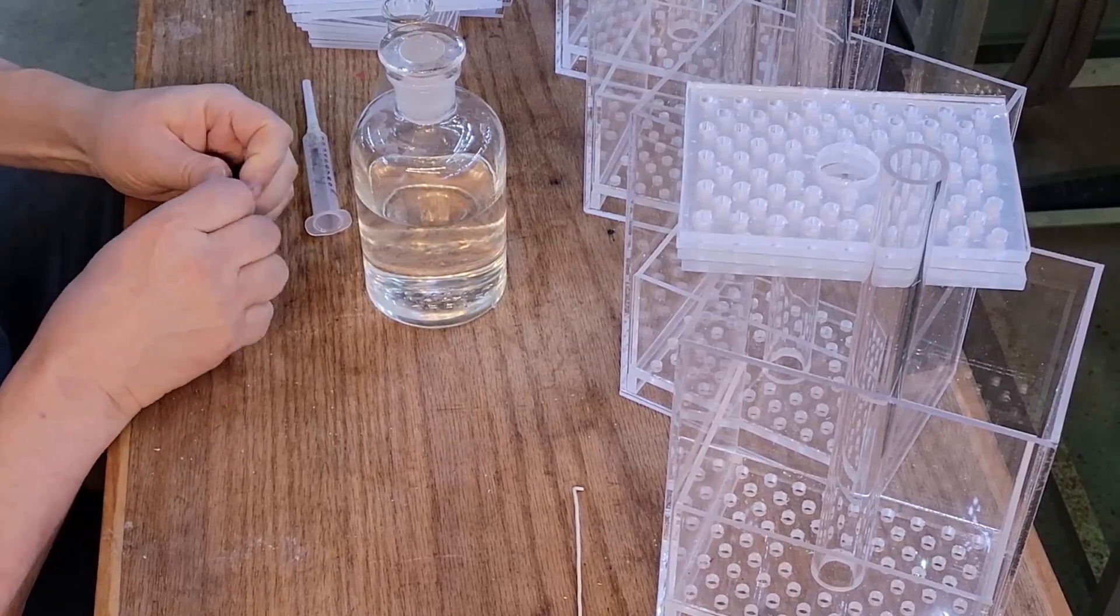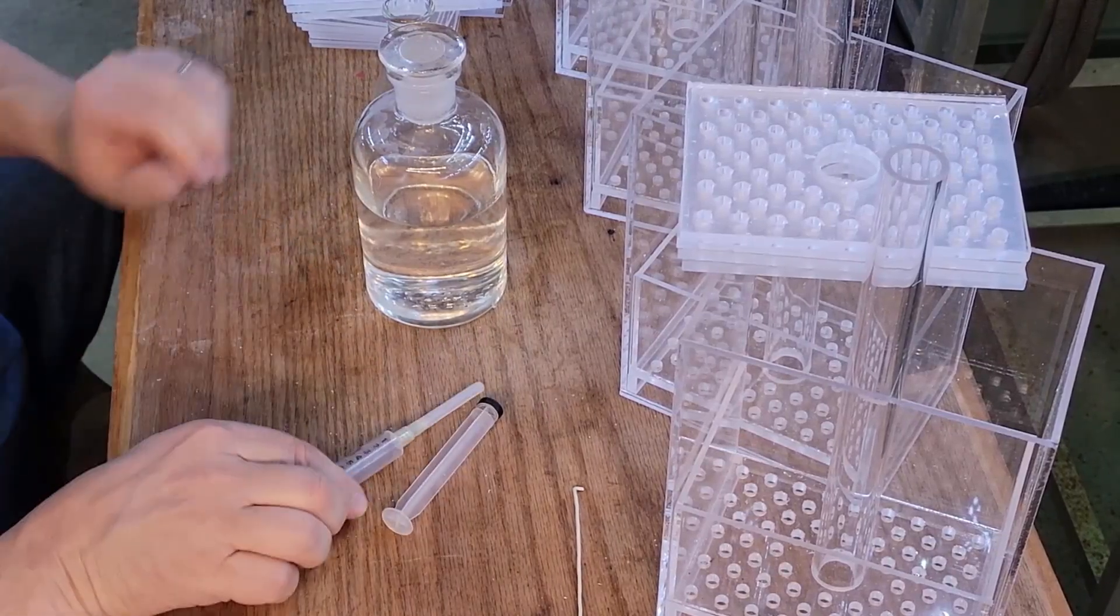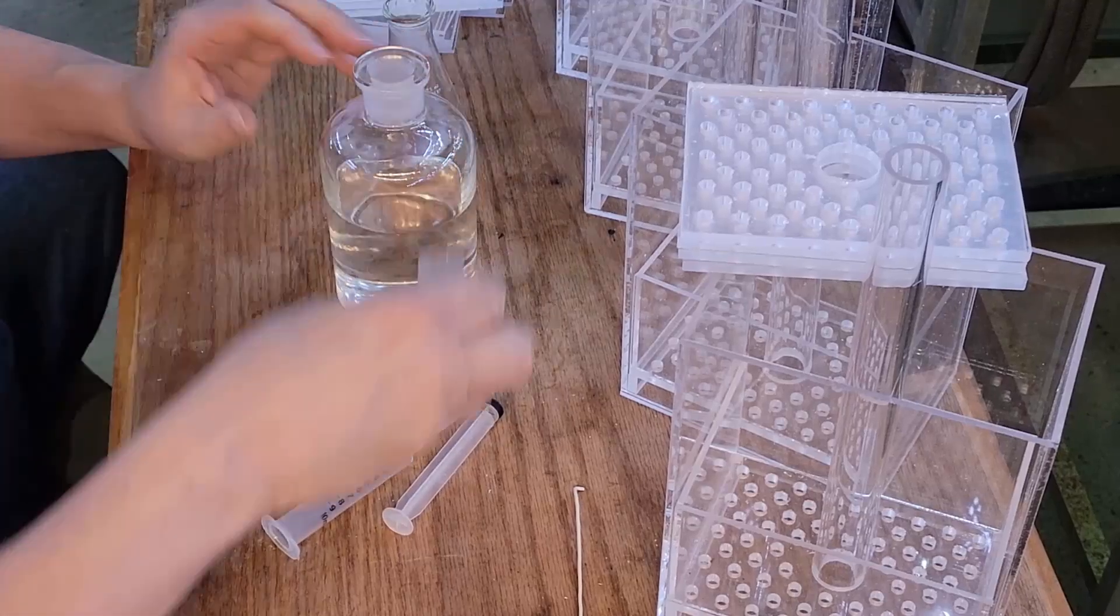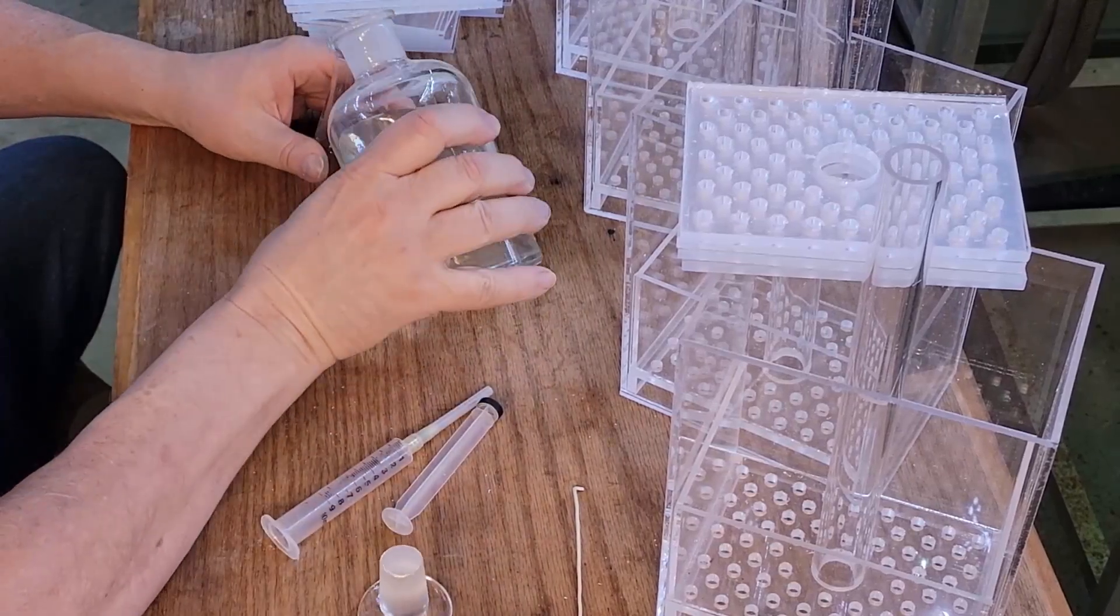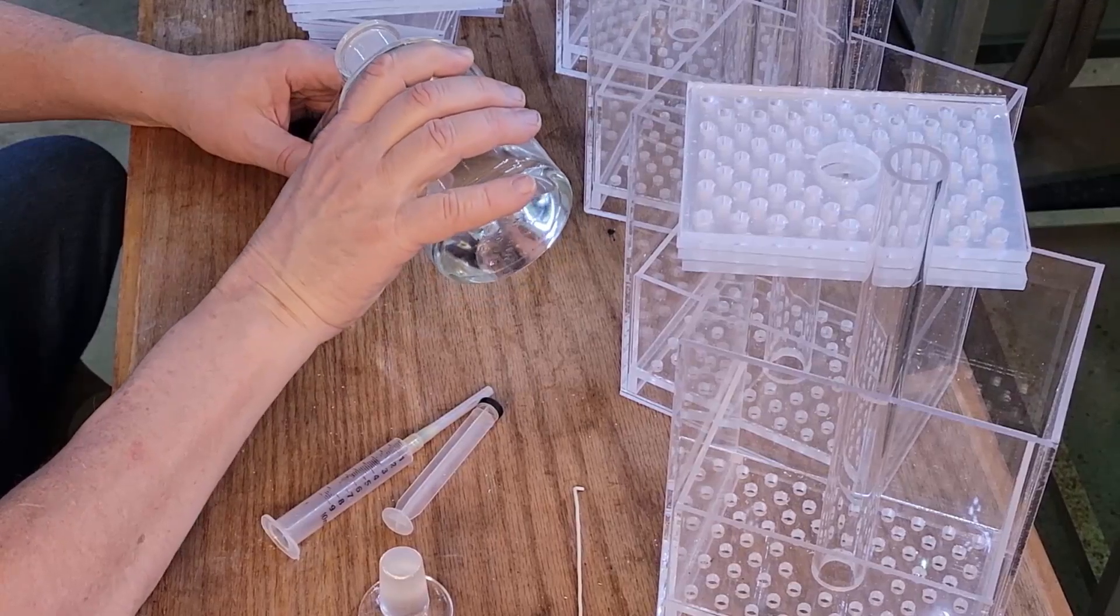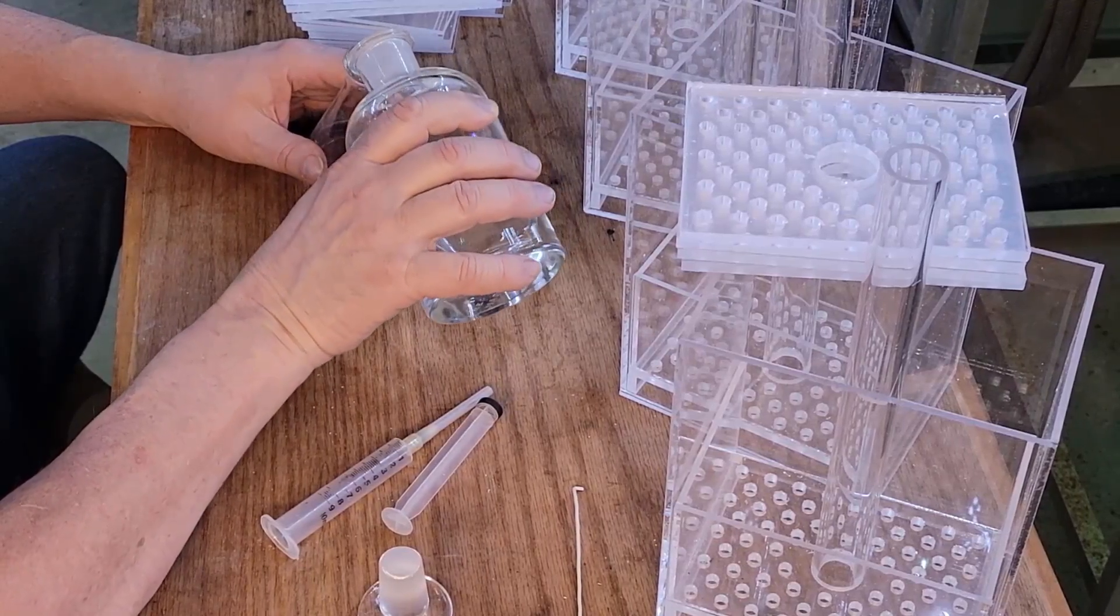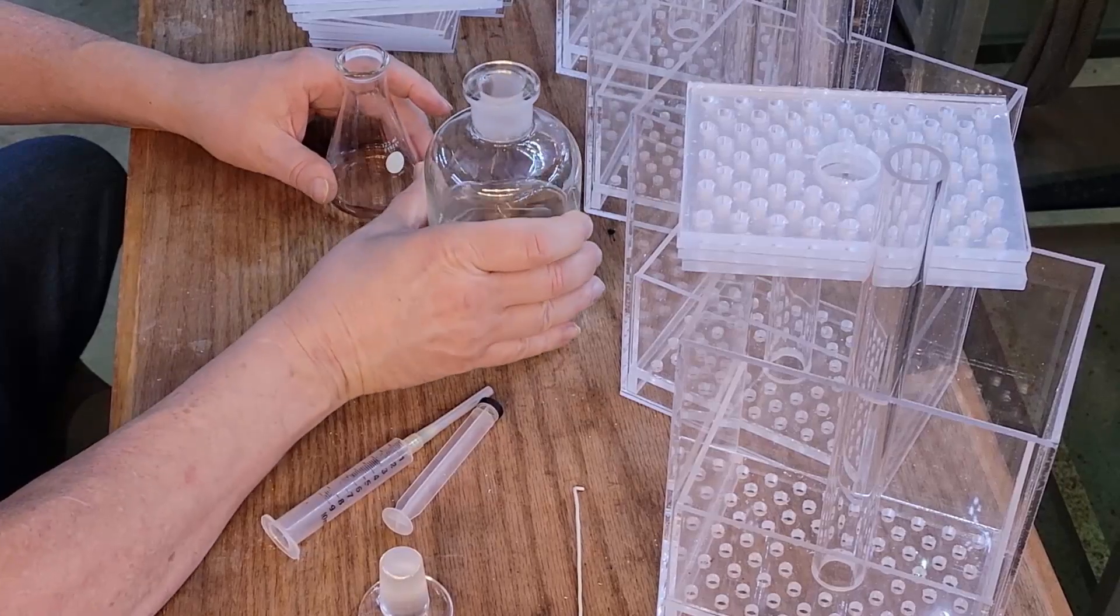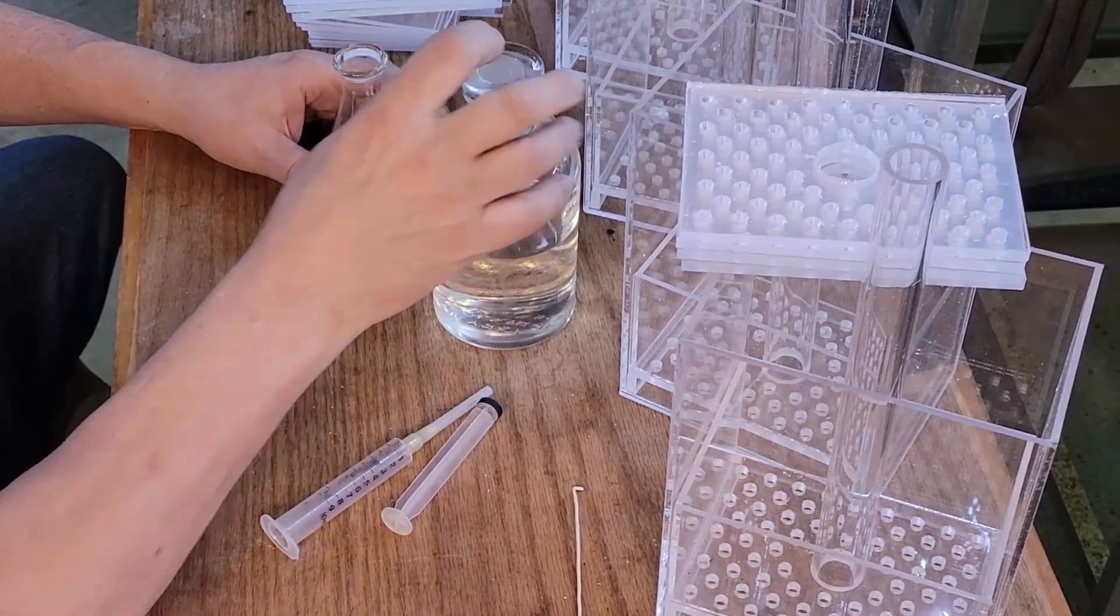So acrylic welding is a chemical weld. What happens is you put a solvent between the two parts of the joint. The solvent will dissolve the acrylic on both sides and then evaporates. After it evaporates, the acrylic solidifies again and that forms the weld.